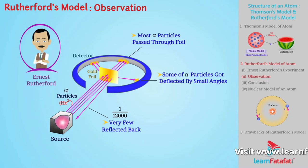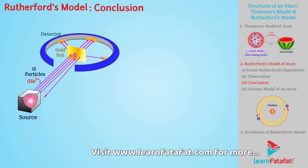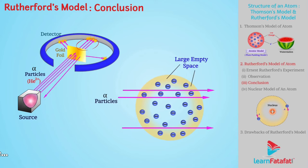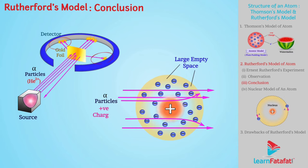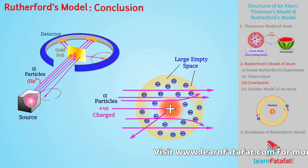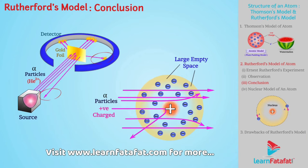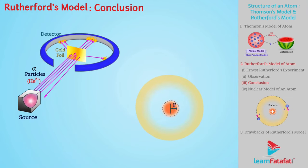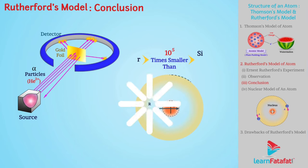On the basis of these observations, Rutherford concluded that: most alpha particles passed without deflection, so there must be large empty space inside the atom. Few alpha particles got deflected, so there must be some strong and dense opposition inside the atom. This opposition must have a positive charge, as the positively charged alpha particles were deflected. Very few particles were reflected back, showing that positive charge and most of the mass of the atom were present in a small volume within the atom. Rutherford identified that the radius of this space is about 10^5 times smaller than the size of the atom.